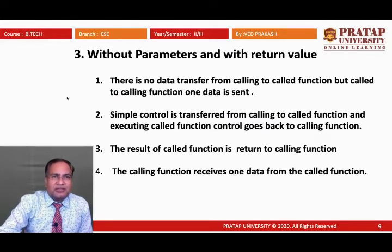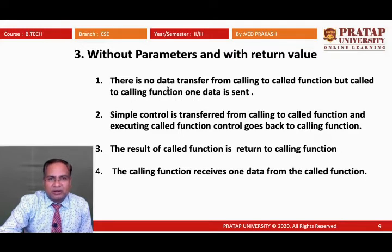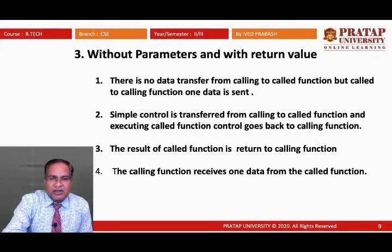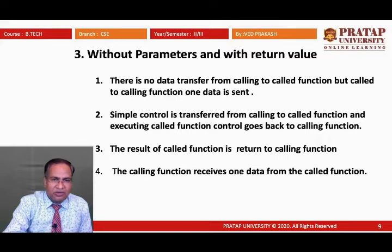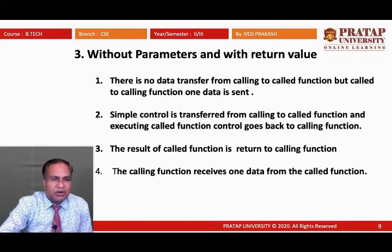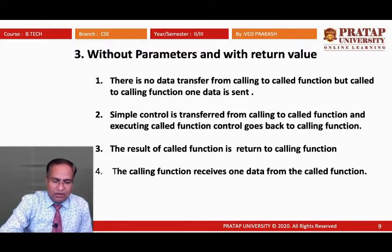Key points for function without parameter and with return value: there is no data transfer from calling to called function, but from called to calling function one data value — the return type — is sent back. Control transfers from calling to called function and after executing, control goes back to calling function. The result of the called function is returned to the calling function, which receives one data value from the called function.